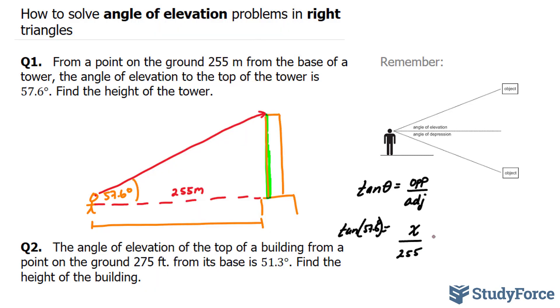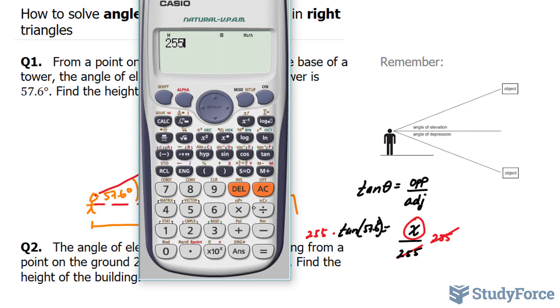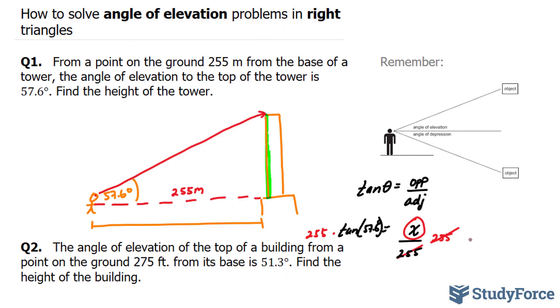By doing that, what happens on the right side? The 255s cancel out and we're left strictly with x. 255 times tangent of 57.6 gives me 403.21.